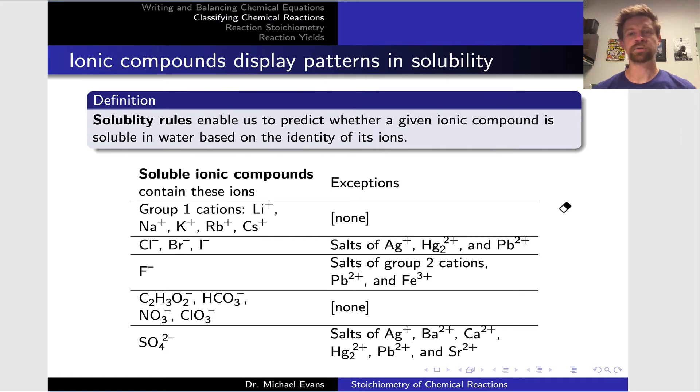One thing we'd like to be able to do is to use solubility, whether compounds are soluble or insoluble, and patterns that we see in solubility to predict the products of precipitation reactions when two solutions of ionic compounds are mixed. We can do this using solubility rules. The solubility rules tell us whether a given ionic compound is soluble in water or not based on the identity of its ions. On this slide, you see a table that lists various classes of soluble ionic compounds.